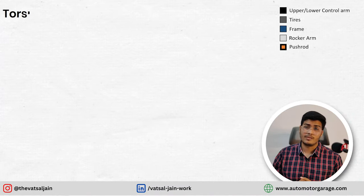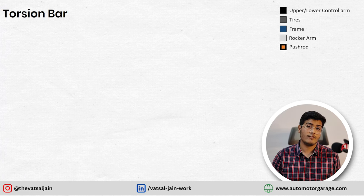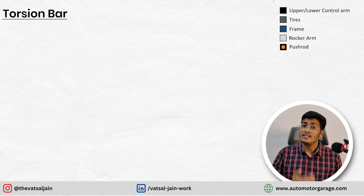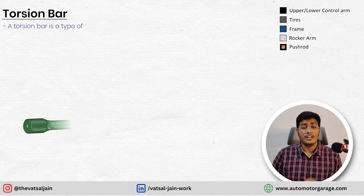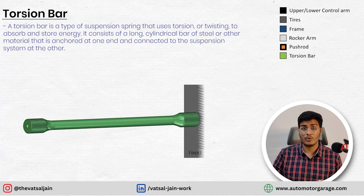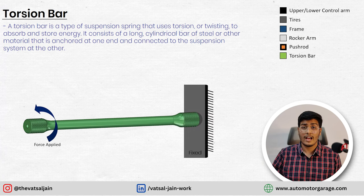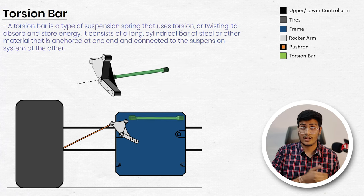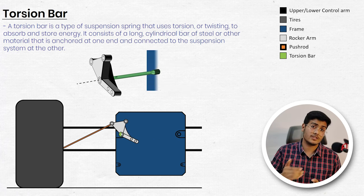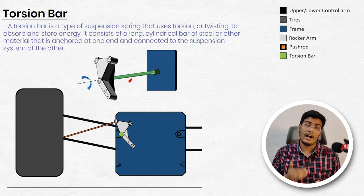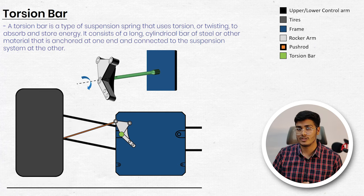Generally in every type of suspension mechanism we have coil springs and dampers. For example, in a double wishbone suspension geometry we have a coilover shock absorber. Similarly, in the pushrod mechanism, instead of a coil spring we have a torsion bar. These torsion bars are long steel elements which provide a counter resisting force when one end is fixed and the other end is twisted. In this assembly, one side of the torsion bar is attached to the rocker arm and the other end is fixed to the frame of the vehicle.